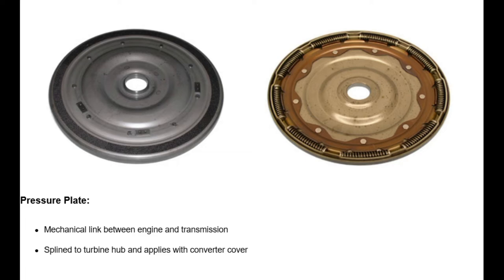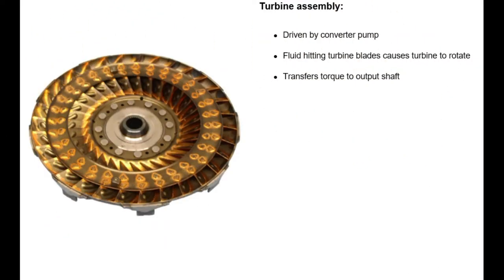The pressure plate component is splined to the turbine hub and applies with the converter cover to provide a mechanical coupling of the engine to the transmission. The turbine assembly is driven by the converter pump through fluid motion. The force of the fluid hitting the turbine blades causes the turbine to rotate. The turbine assembly also transfers torque to the output shaft and is the driven or output member.